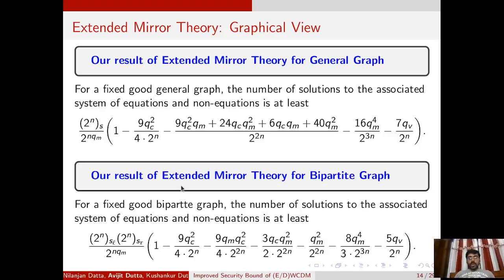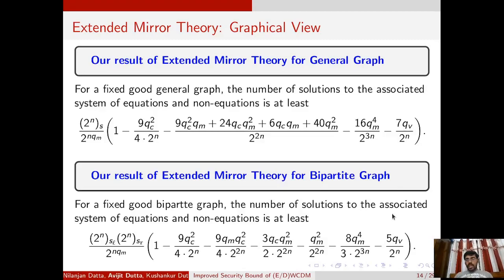Similarly, for the extended mirror theory applied to a bipartite graph: for a fixed good bipartite graph, the number of solutions is at least 2^n falling factorial sL times 2^n falling factorial sR, over 2^n to the power qm, times (1 minus some error term), where sL is the number of vertices in the left partition, sR is the number of vertices in the right partition, and qm is the total number of edges. Here qc is the number of edges of the subgraph after deleting non-equation edges, and qv is the total number of non-equation edges in graph g.